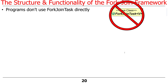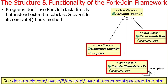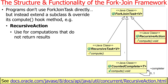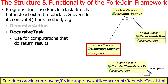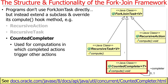Programs don't actually use fork join tasks directly. Instead, they extend a subclass of ForkJoinTask and override the compute method. There are three classes: RecursiveAction, which has a compute method that returns no result; RecursiveTask, which is used for computations that return a result; and CountedCompleter, used for computations in which completed actions trigger other actions. CountedCompleter is used primarily for things like Java parallel streams. RecursiveTask and RecursiveAction are especially important, as your next programming assignment will have you programming that.